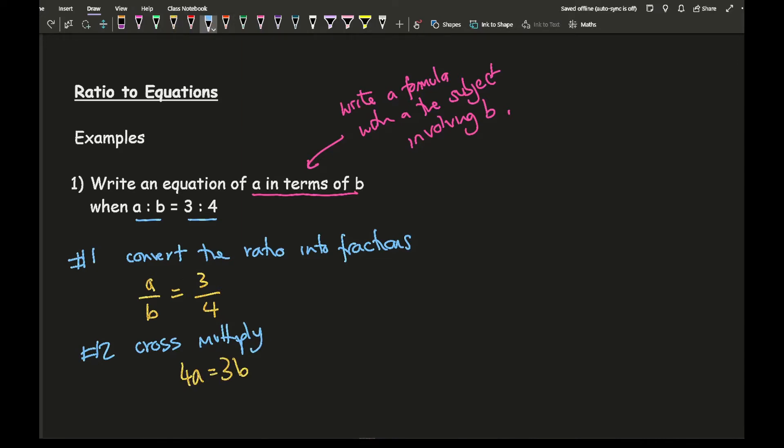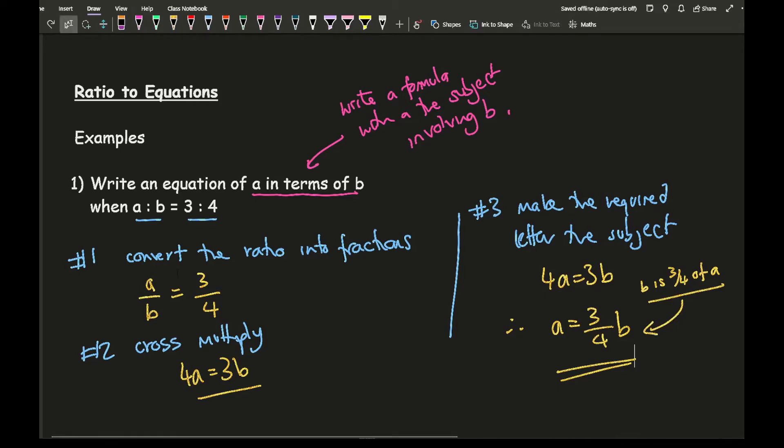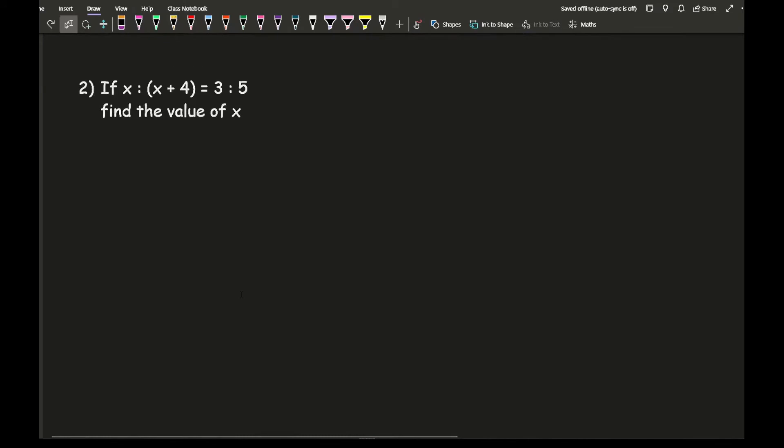Our third step is to make the required letter the subject. In this case, the question is asking to make a the subject. So all I need to do is rearrange this formula. I've got 4a equals 3b, so therefore a equals 3 over 4b, and there is my final answer. Translating this into words, we could say that b is 3 quarters of a. It's really important that you're able to translate this, particularly when working backwards, which we'll go on to later in the video.